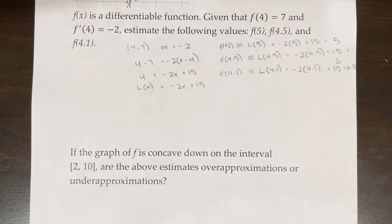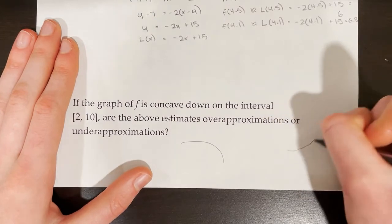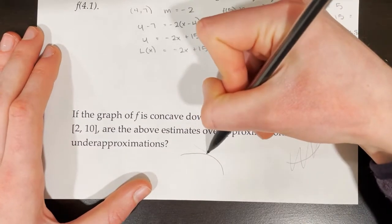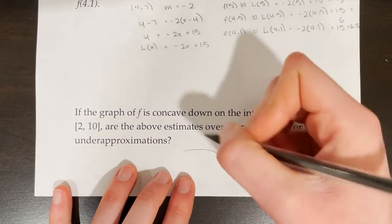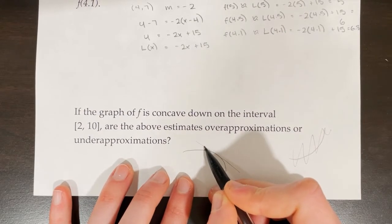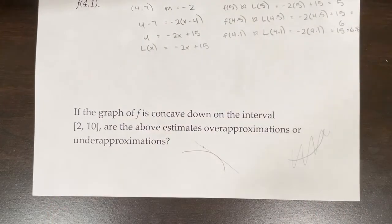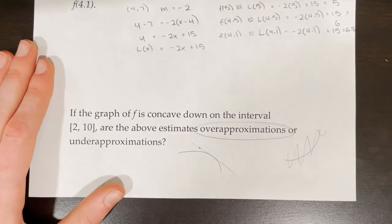If the graph of f is concave down on the interval from 2 to 10, are the above estimates over-approximations or under-approximations? Concave down means the graph looks like this; concave up means the graph looks like this. In the concave down case, our tangent line would look like this — the value we estimate on the tangent line is going to be a bit of an over-approximation because the actual function value would be lower. So all of the above estimates are over-approximations because the graph of f is concave down.